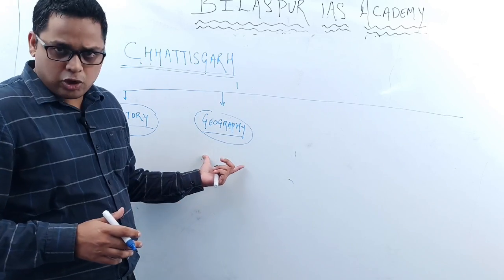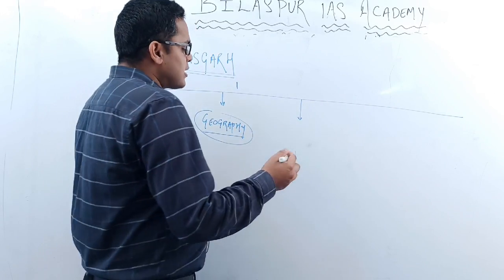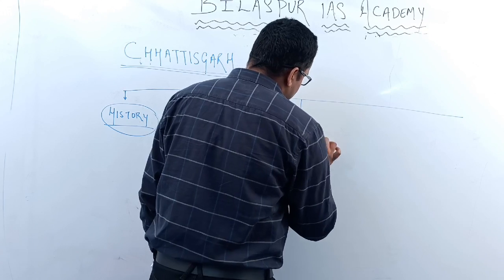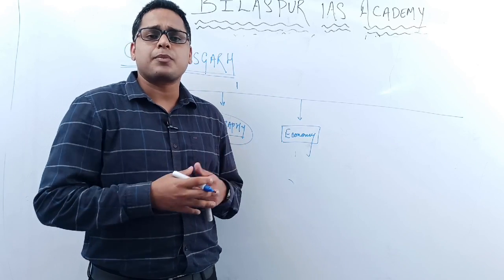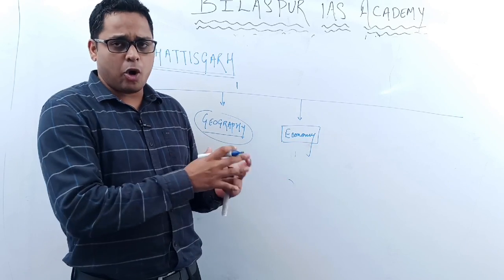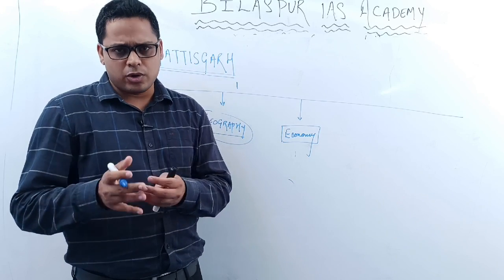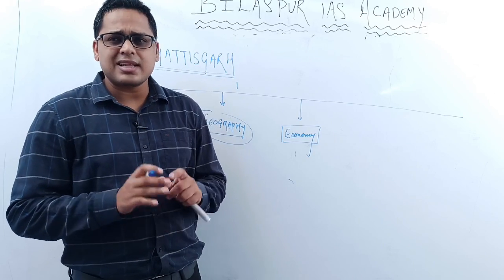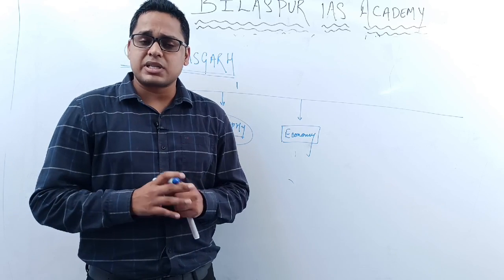We will talk about the history and geography of Chhattisgarh. After these two things, there is one more section called the economy of Chhattisgarh. We will study the economy of Chhattisgarh, but we do not need to study fiscal policy or repo rate — all those sections fall under Indian economy. For Chhattisgarh economy, we will talk about the fiscal deficit percentage, GDP of Chhattisgarh, various programs and schemes run by the Chhattisgarh government.